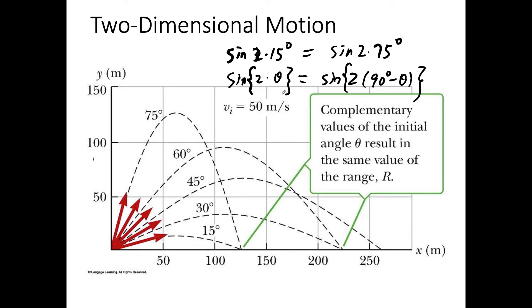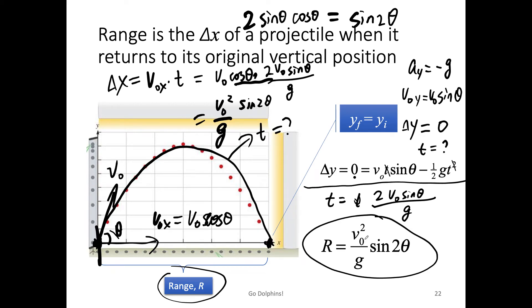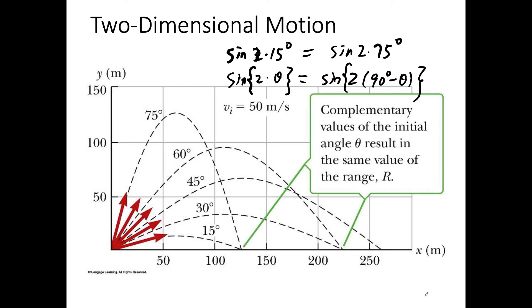Here's a question: if your initial speed is fixed, which angle gives you the maximum range? Try to think about that. If you can figure it out, send me an email and let me know. If you cannot, also write an email and ask me what's the optimal angle for the projectile range.